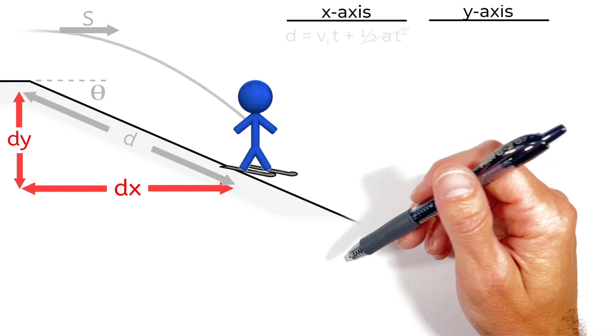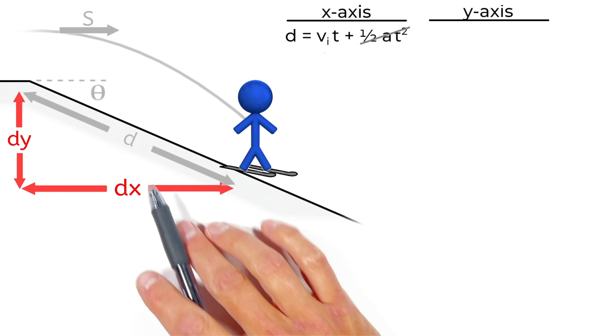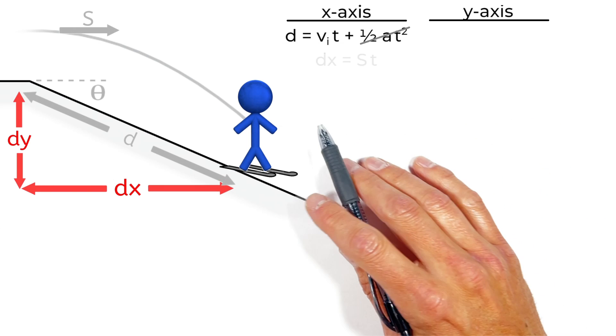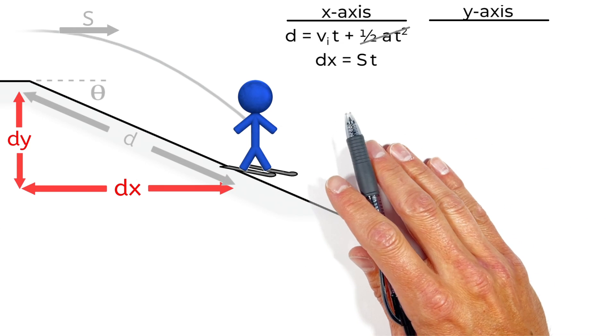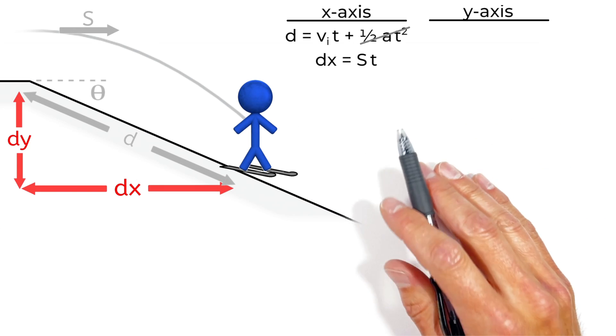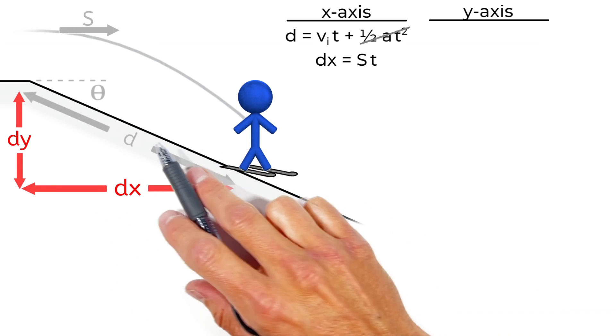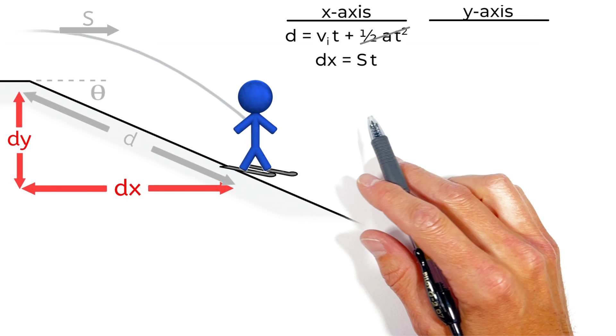In solving for the displacement of the skier, the displacement of the skier horizontally, or in the x-axis, is going to be given by displacement equals ST. That is to say, the skier is going to be moving horizontally at some speed S the entire time it's in the air, T being time.